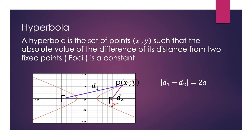A hyperbola is the set of points x and y such that the absolute value of the difference of its distances from two fixed points is a constant. Let's say we have a point P with coordinates x and y. The distance from P to F1 is d1, and the distance from foci F2 to point P is d2. So the absolute value of d1 minus d2 equals 2a.